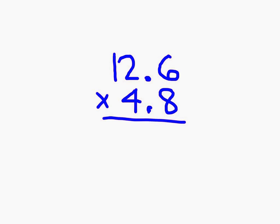Again, if we're asked to estimate the product of these two decimal numbers, we could estimate this to the nearest whole number. 12 and 6 tenths would go to 13, 4 and 8 tenths would go to 5, and 13 times 5 would give us 65. That's our estimated product.